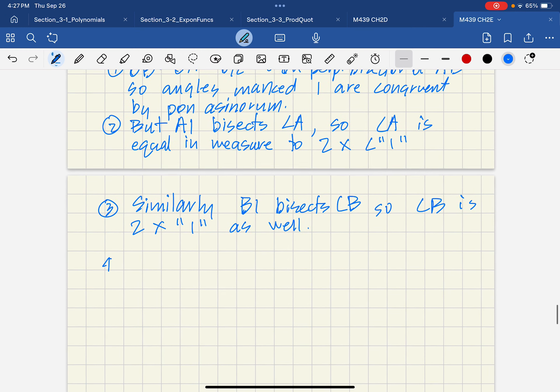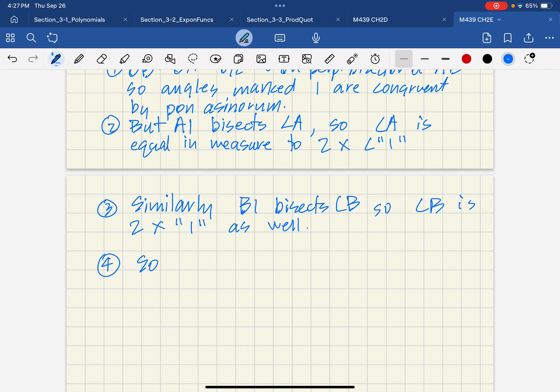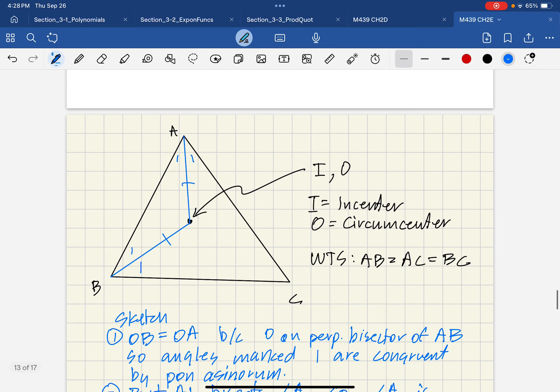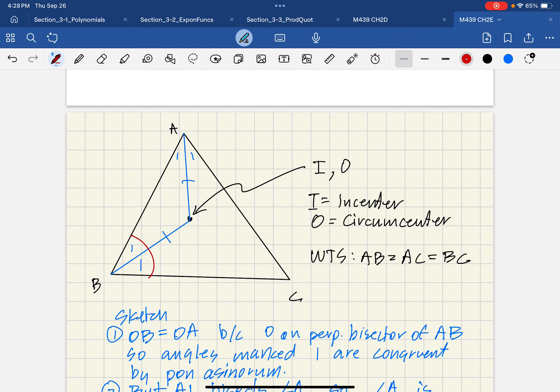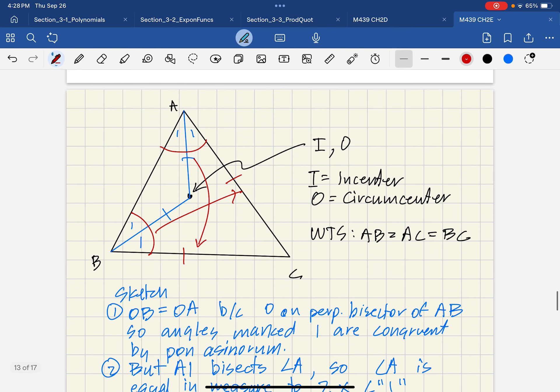So what have we shown? We've shown angle A is equal to angle B. Thus, again, by Pons Asinorum. We get, let's see, if this whole angle is equal to this whole angle, then that side has to be equal to that side. So it looks like AC is equal to BC.